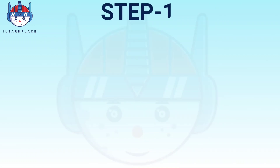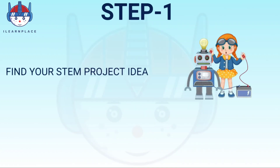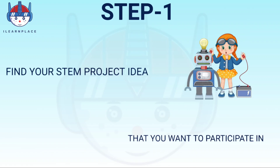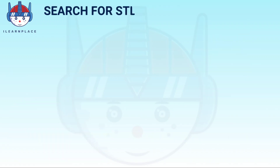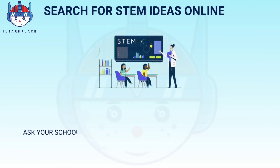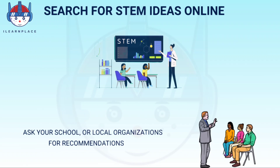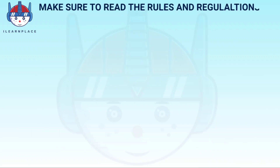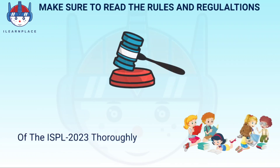Step 1: Find your STEM project idea. The first step is to find your STEM project idea that you want to participate in. You can search for STEM ideas online or ask your school or local STEM organizations for recommendations. Make sure to read the rules and regulations of ISPL 2023 thoroughly.